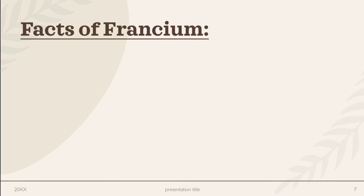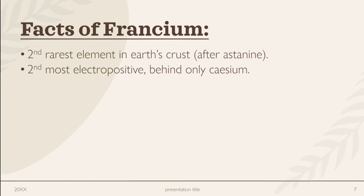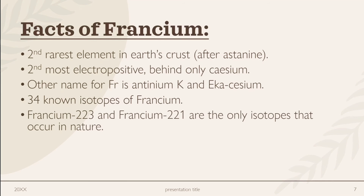Facts of Francium: Francium is quite a rare element — it is found in very small amounts in the Earth's crust. It is the second rarest element after Astatine. This is why it has no commercial uses. It is the second most electropositive element after Caesium. Francium's other names are Actinium K and Eka-Caesium. Francium has 34 known isotopes.